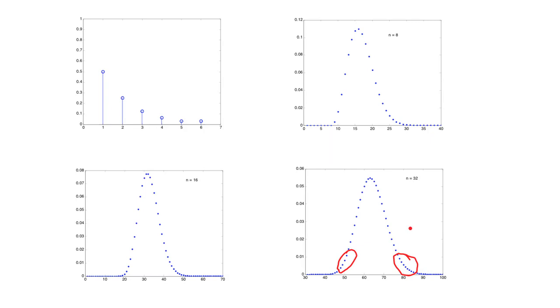So in this instance, it's really the asymmetry of the original distribution that makes it difficult to converge, and it will take larger values of n before we can get a very accurate approximation.